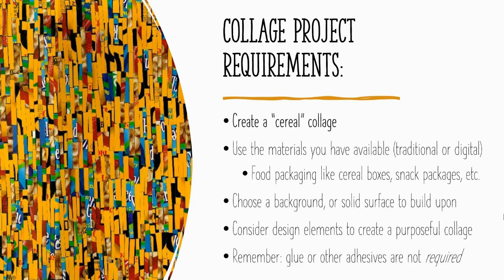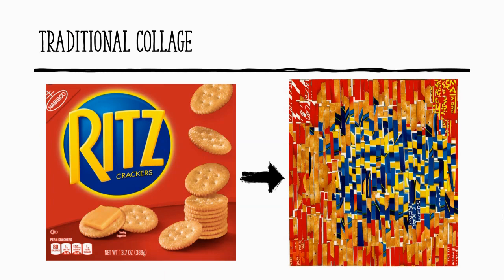Also remember that glue or other adhesives, while helpful, are not required. Some options for materials include working with a traditional collage using an actual cover from a snack container or a cereal box. Maybe you're all out of cereal right now but you might have snack containers and packaging — for example, this Ritz Cracker box was turned into the collage you can see on the right.